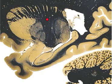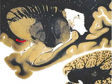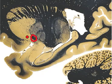Then we have the internal capsule, which is a bundle of ascending and descending fibers right here. And we can see a little bit of the claustrum right there. And this would be the anterior commissure, a bundle of white fibers — axons connecting both hemispheres. And that's about all the major structures I'm going to point out in this section.